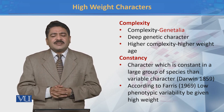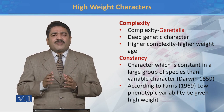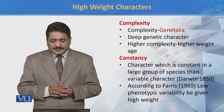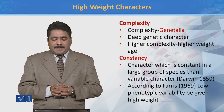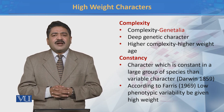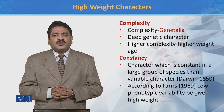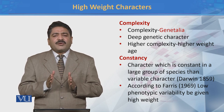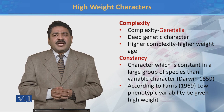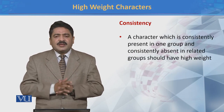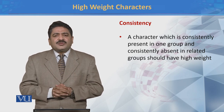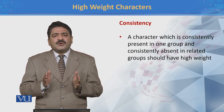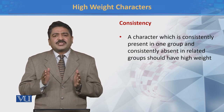Constancy यह दूसरा attribute है, दूसरा high weight character है. ऐसे characters जो constant रहते हैं उनकी weightage ज़्यादा होती है उन characters के मुकाबले में जो variable हैं. Ferris ने 1969 में कहा कि ऐसे characters जो less variable हैं, जिनमें variation कम होती है, उनमें phylogenetic content ज़्यादा है, इस वजह से वो high weight characters कहलाते हैं. इसी तरह जो character consistently किसी एक group में present हो और किसी दूसरे group में consistently absent हो, वो high weightage character कहलाता है.